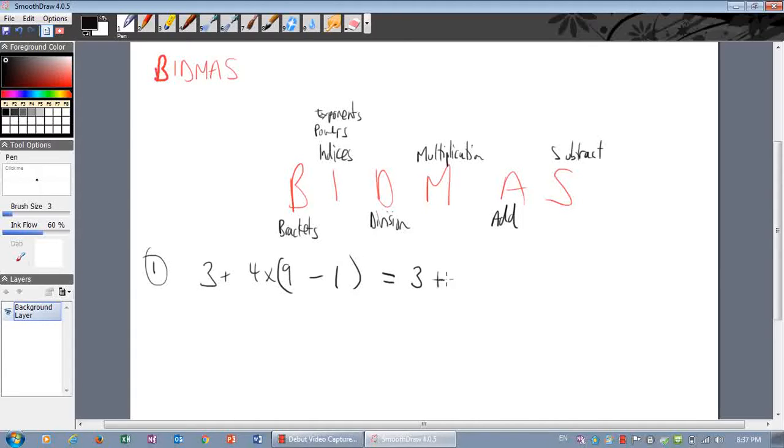So we'll leave everything else, so 3 plus 4 times, and let's work out what's inside the brackets. 9 minus 1, we're going to change that to an 8. And then the brackets are gone.